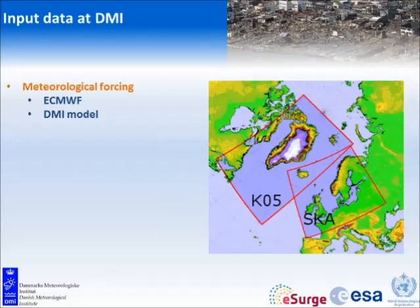At the Danish Meteorological Institute we use meteorological forcing from the European Centre for Medium-Range Weather Forecasts. They have a global model, and we downscale that with our own atmospheric model. Denmark is here, and we have a model covering this area out to Iceland and a bit of the North East Atlantic. We also have a model for Greenland since that's also part of the Danish Kingdom, but I'm not going to talk about Greenland today.